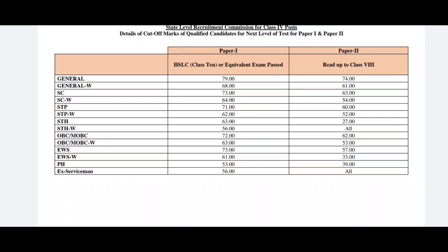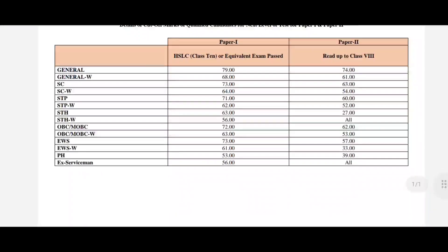Next, SC cut-off — paper one is 73, paper two is 63. Next, SC W cut-off — paper one is 64, paper two is 54. Next, STP cut-off — paper one is 71, paper two is 60. STP W cut-off — paper one is 62, paper two is 52.